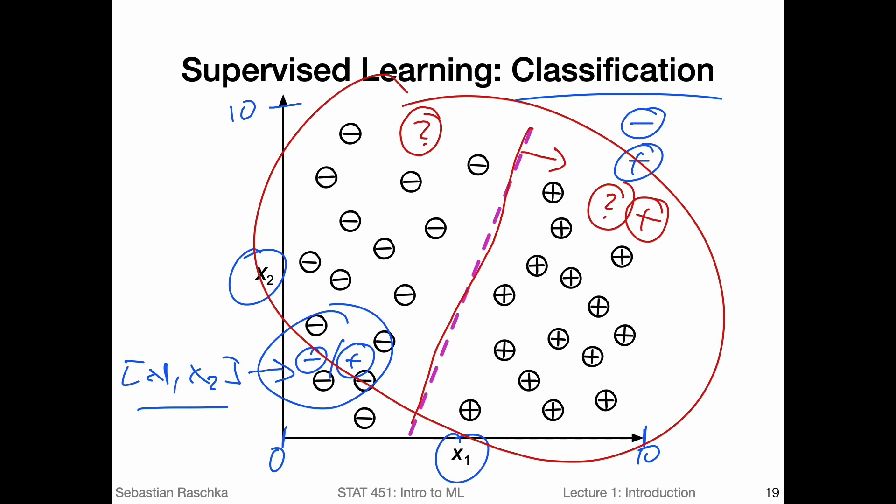And the goal really is for the machine learning algorithm here to draw this decision boundary, because there are infinite ways to draw a decision boundary. So we could have one that is like here, but it's maybe not a good idea, maybe here, or here, and so forth. And usually the machine learning algorithm is defined like this, we train it such that it minimizes the number of making wrong predictions. So in this case, here, this one would be a pretty good line, I would say.